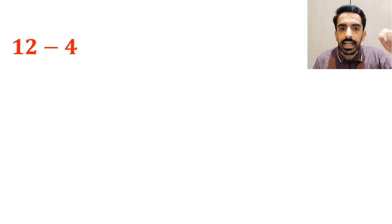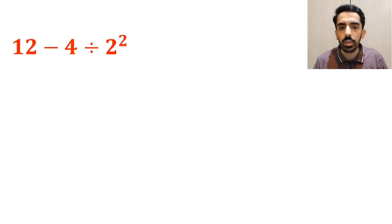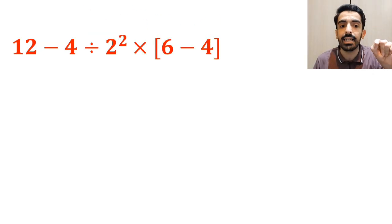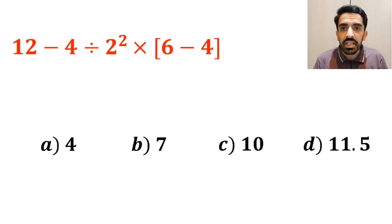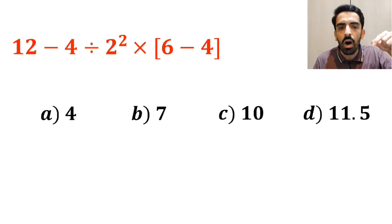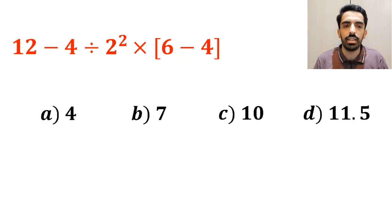As you can see on the screen, in this question, we have an expression that says 12 minus 4 divided by 2 squared, multiplied by open bracket 6 minus 4 close bracket. The options for this question are as follows.